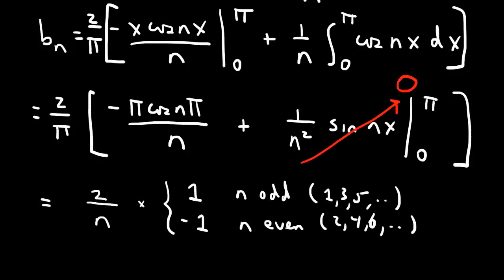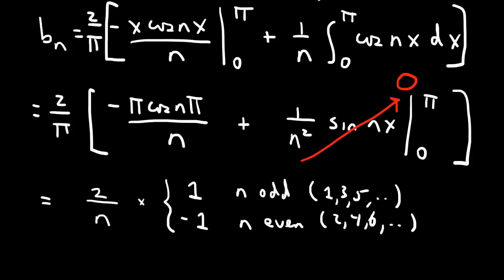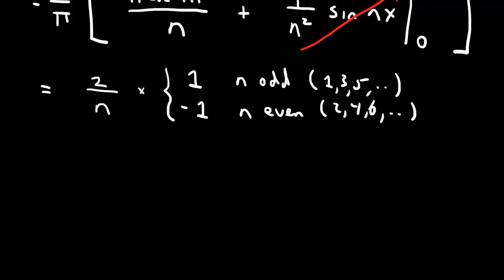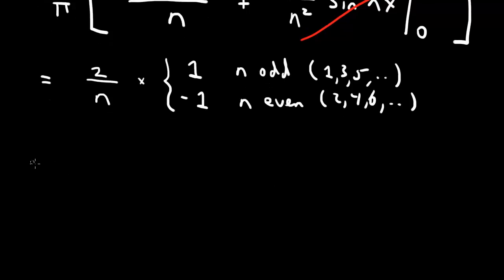So that's our bn coefficient. Then we can write down our Fourier series now. So f of x, which is x, is then equal to the sum from n equals 1 to infinity bn sine nx.